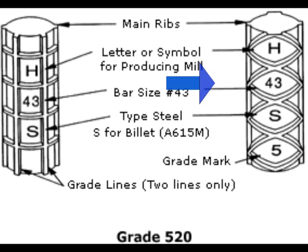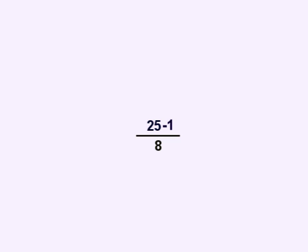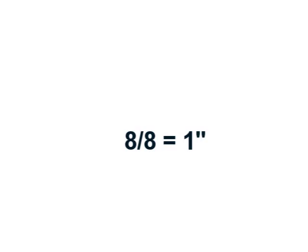So what does that mean to you? Let's say that you just can't make heads or tails about the size of this piece of Rebar. Just look at the size and, for example, it's going to say number 25. What does 25 mean to you? What you have to do is grab the metric number, which is 25, minus 1, and then divide it by 8. So it will be 25 minus 1 equals 24, divided by 8 equals 8. That is the size of the Rebar — so it's 1 inch Rebar.